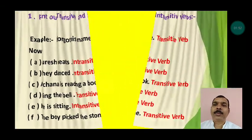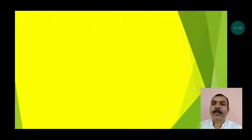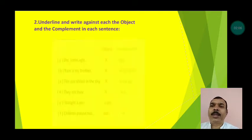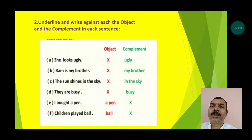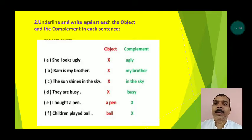Number two: underline and write against each sentence. Two columns are given — columns of object and complement. A: 'She looks ugly' — there is no object; the complement is 'ugly'.